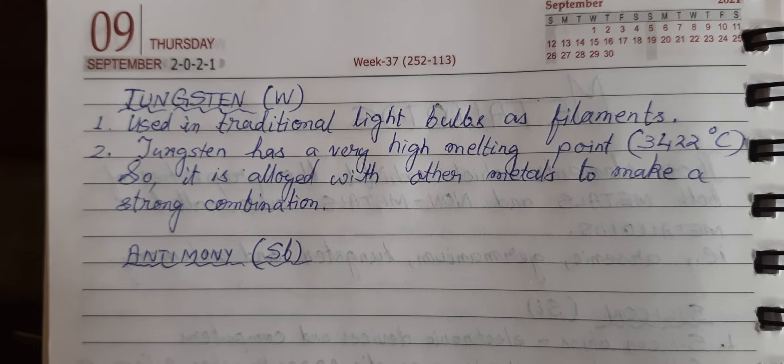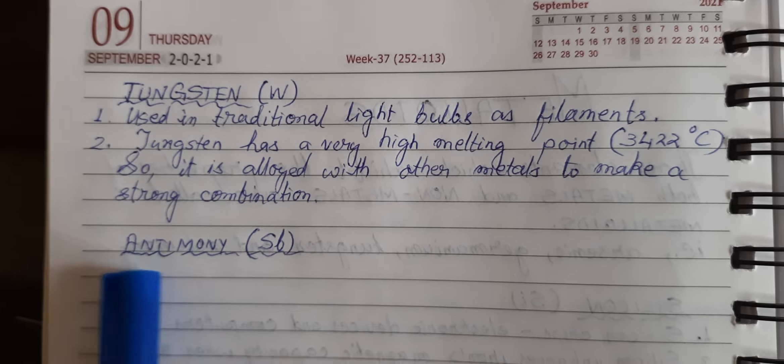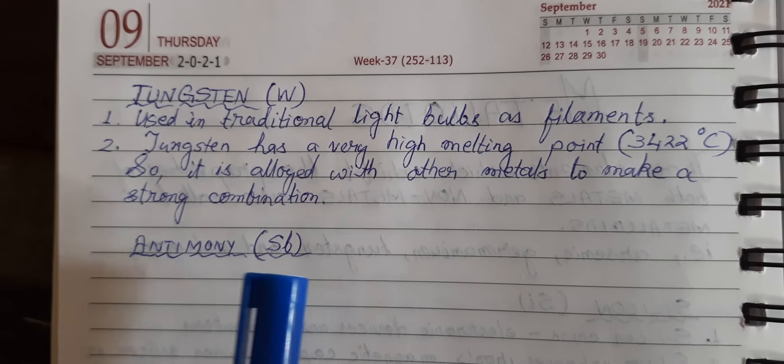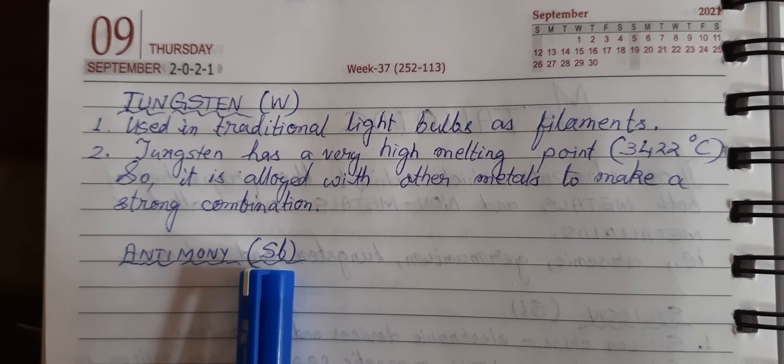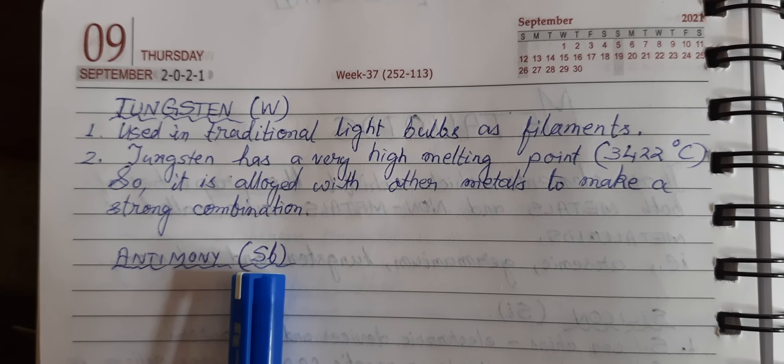The next metalloid is antimony, and its chemical symbol is SB.